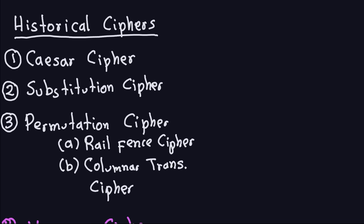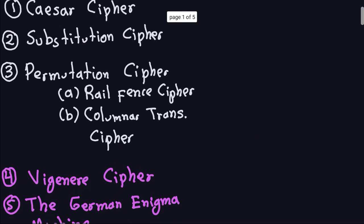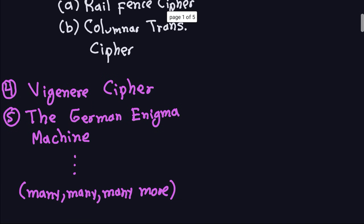We could spend the rest of this course talking about historical ciphers — ciphers that basically work on letters. There are a lot more of them. For example, one that is very interesting is the German Enigma machine, which was used in the war to encrypt messages. There are many, many more ciphers called historical ciphers, but these are not the ciphers people actually use today.